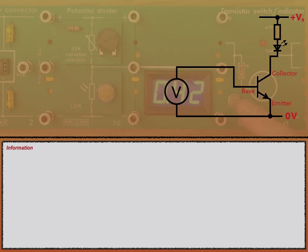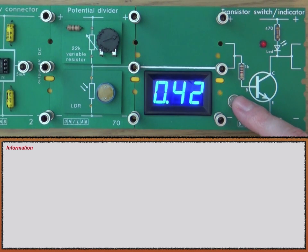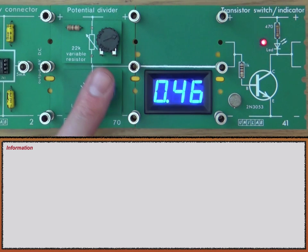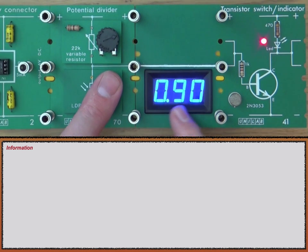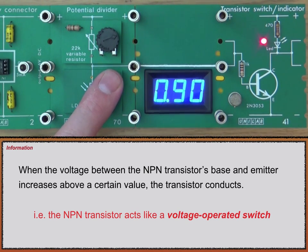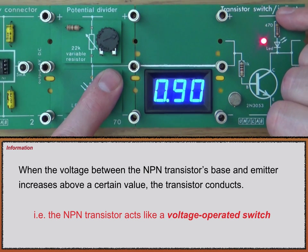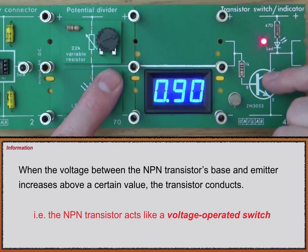This is the symbol for the NPN transistor, and in fact this is it here. When the voltage between the base and the emitter is below 0.7 volts it's not conducting. But if I place my finger over the LDR, the voltage increases above 0.7 volts. So if the voltage is above 0.7 volts this NPN transistor starts to conduct, meaning electrons flow through it and through anything in series — we have an LED and a resistor — so the LED lights up.